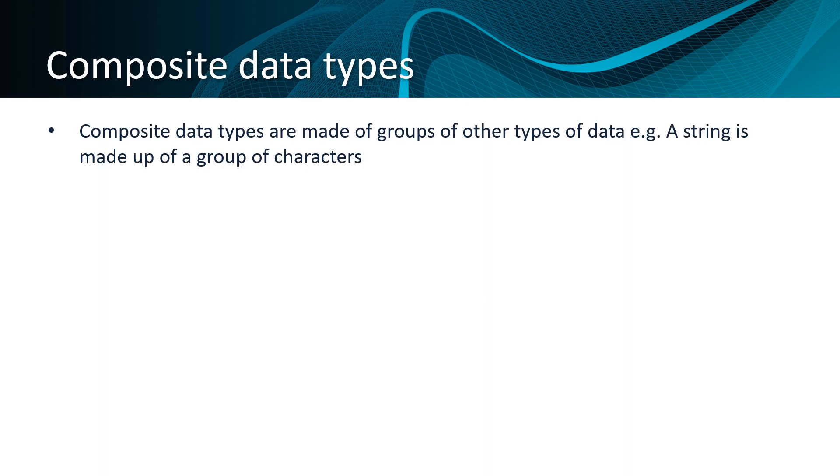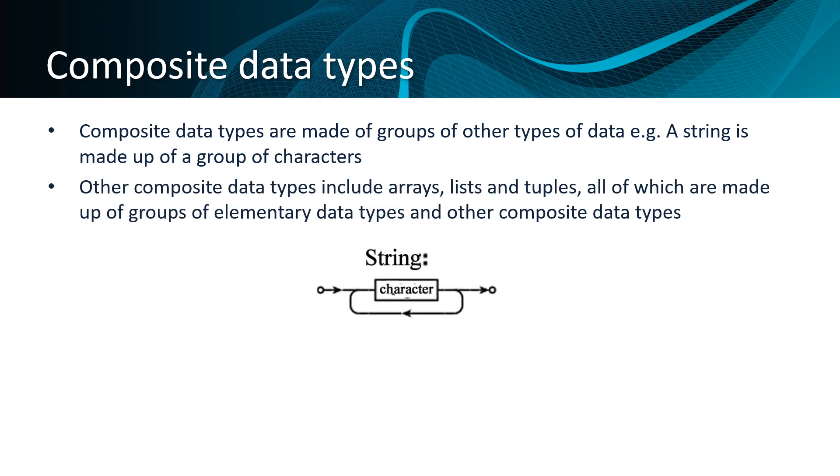Composite data types are made up of groups of other types of data. For example, a string is made up of a group of characters. Other composite data types include arrays, lists, and tuples, all of which are made up of groups of elementary data types and other composite data types as well. For instance, an array can include an array as one of its members.